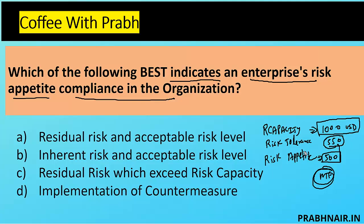The question asks which option best indicates risk appetite compliance. Option A is residual risk and acceptable risk level. Option B is inherent risk and acceptable risk level. Inherent risk is the risk which is untreated — for example, when you join an organization you see many transactions; it's not possible to audit each one, there's no control, so you plan to ignore some of them. That default risk is inherent risk.